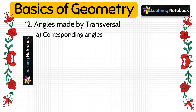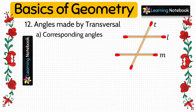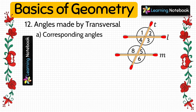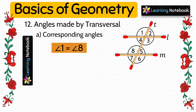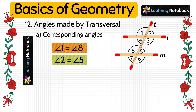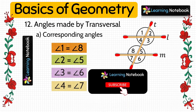The first type of angles made by a transversal are corresponding angles. Transversal T is making four angles at one intersection and four angles at the other; let's name them 1, 2, 3, 4, 5, 6, 7 and 8. If two lines are parallel, the pairs of corresponding angles made by the transversal are equal: angle 1 equals angle 8, angle 2 equals angle 5, angle 3 equals angle 6, and angle 4 equals angle 7.